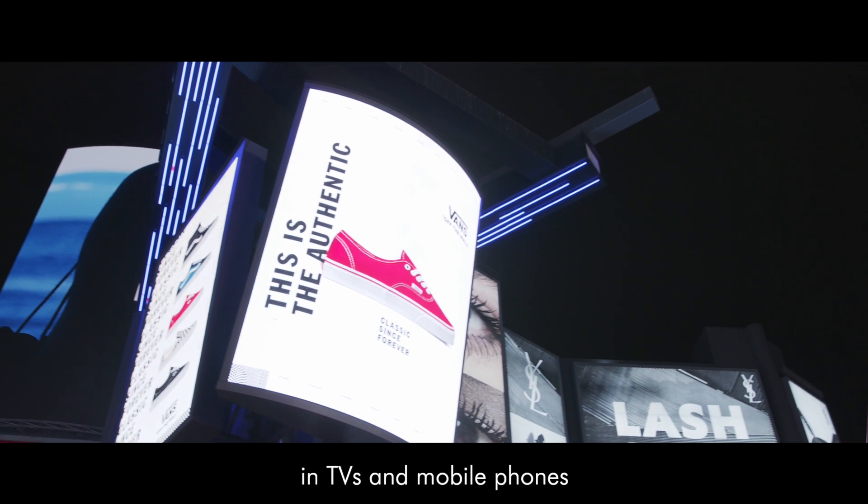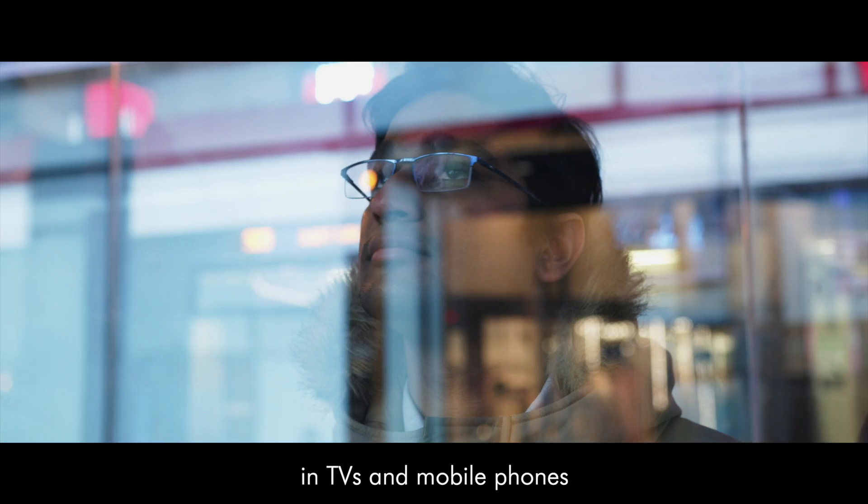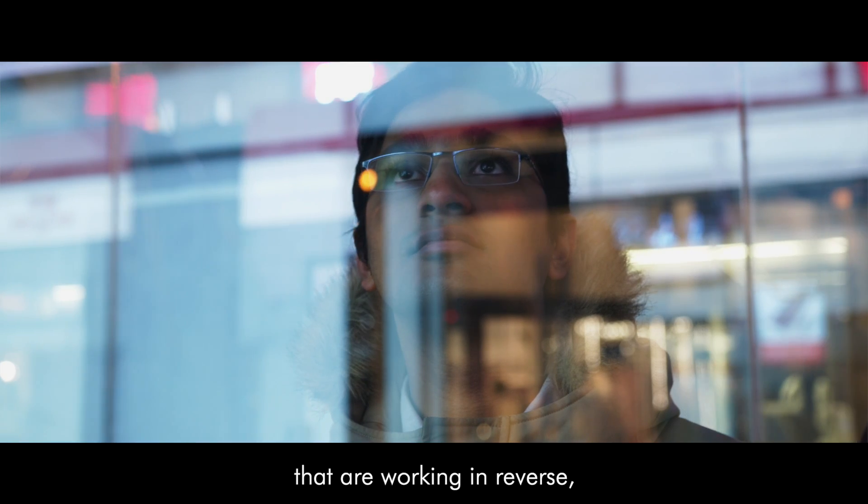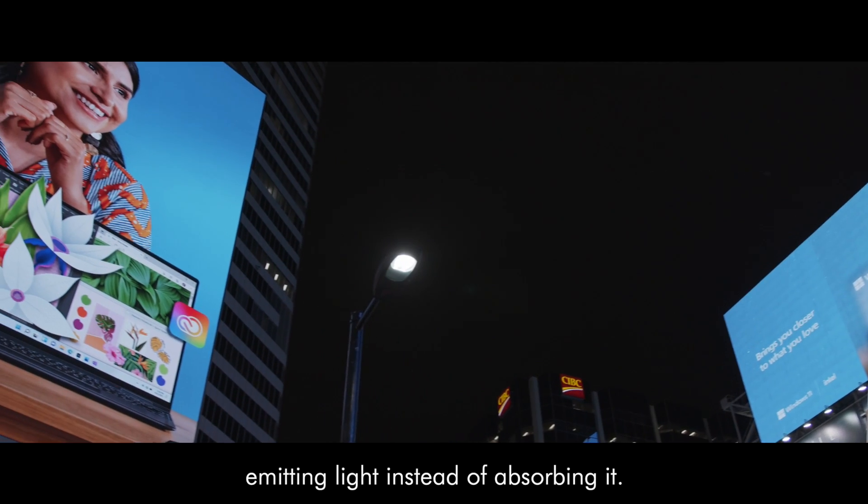All of the screens that you see in TVs and mobile phones are just solar cells that are working in reverse, emitting light instead of absorbing it.